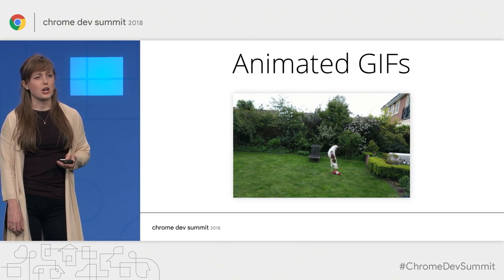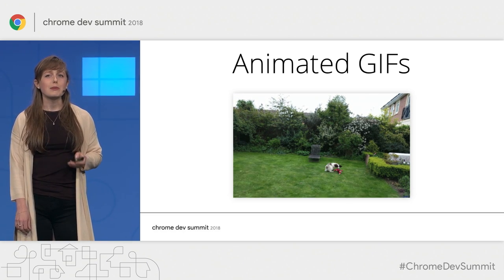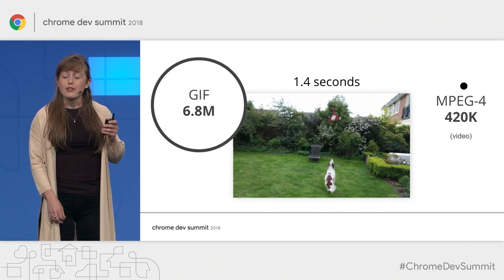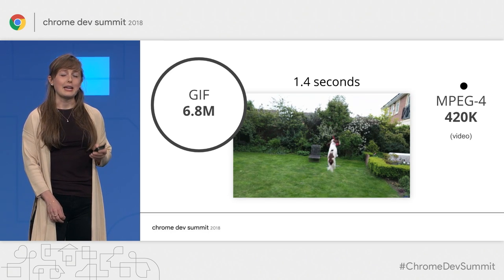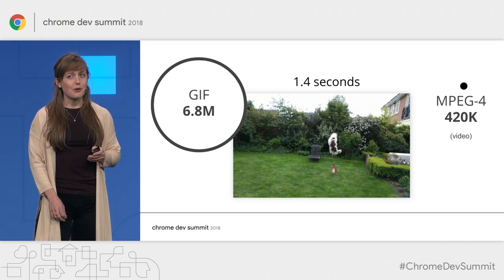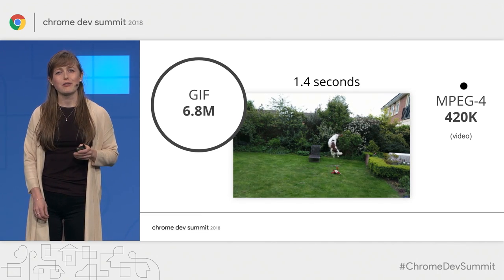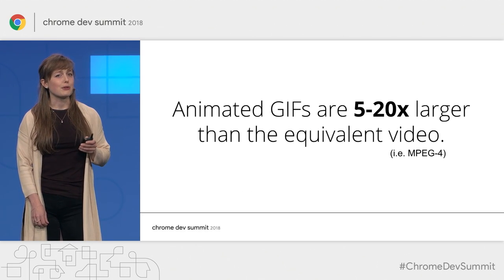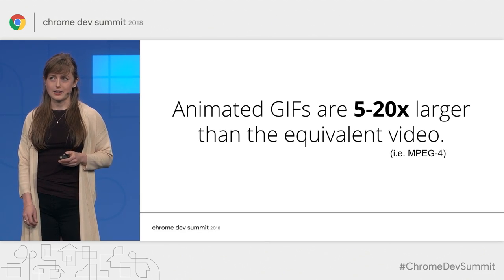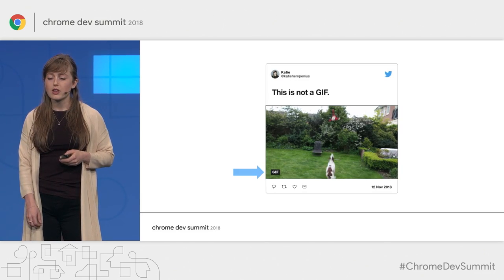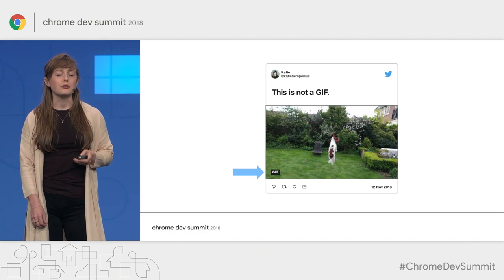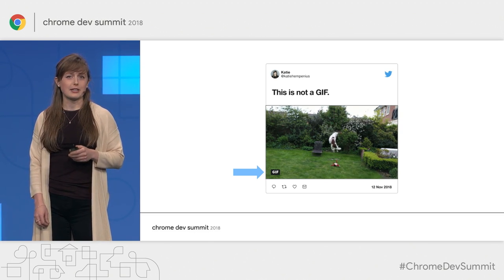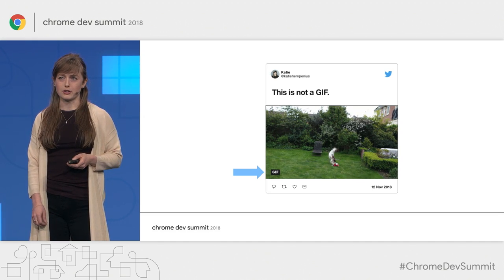The first image format I want to talk about is the animated GIF. You should not be fooled by their crappy image quality — they're actually huge in file size. This 1.5-second clip is 6.8 megabytes as a GIF. As a video, however, it is 16 times smaller at 420 kilobytes. Animated GIFs can be anywhere from 5 to 20 times larger than the same content served as a video. This is why, if you've ever inspected your Twitter feed, you may have noticed that content labeled as GIF is not actually a GIF — Twitter automatically converts uploaded GIFs to video.